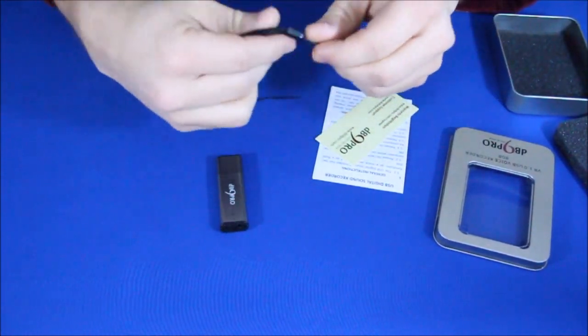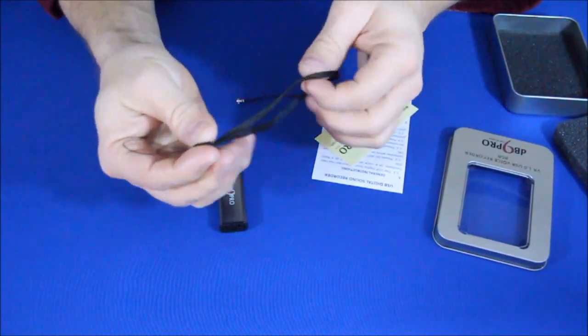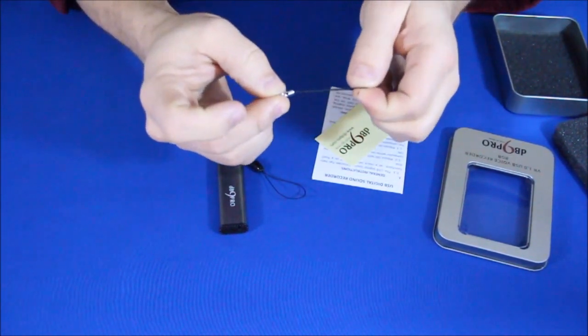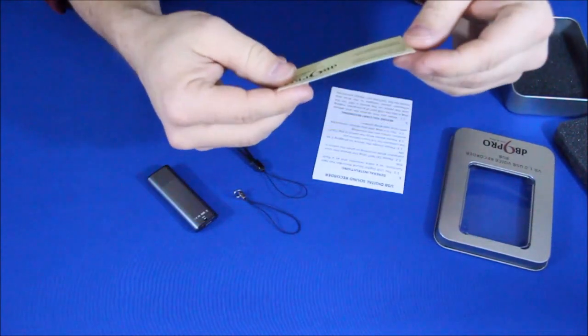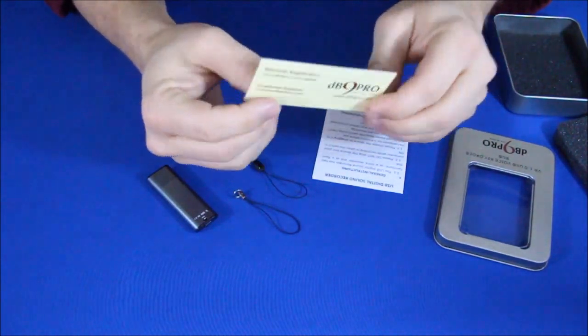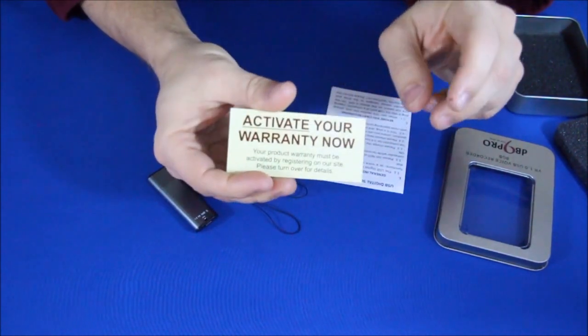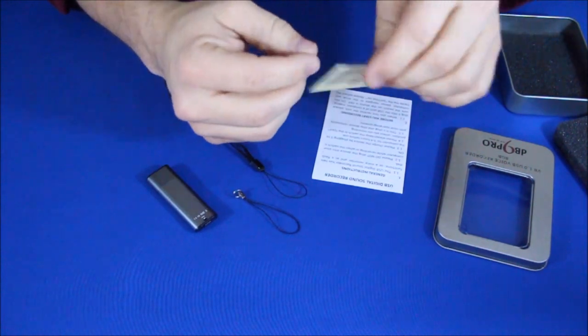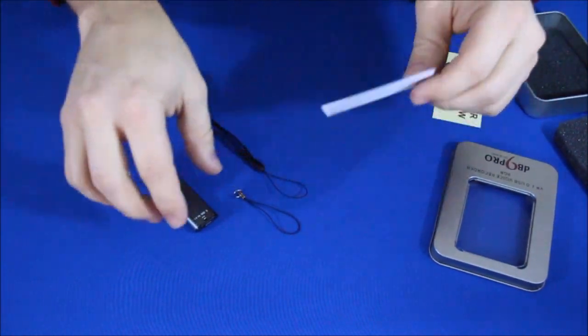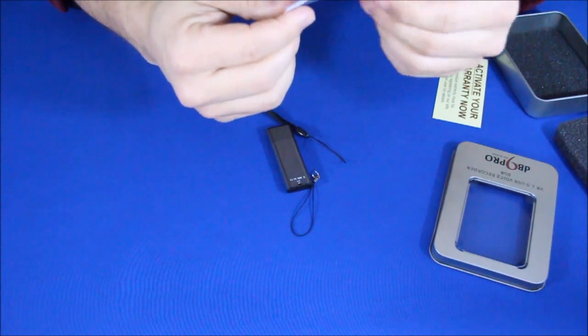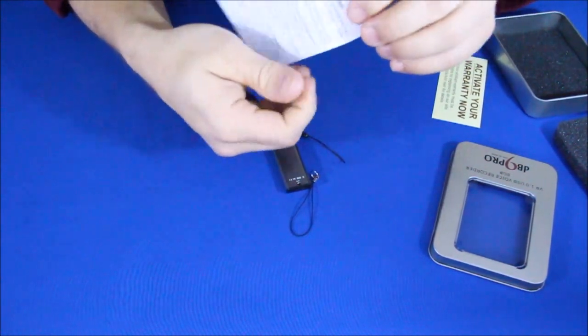We've got a couple of lanyards here. We've got a nice wrist strap type lanyard and then one of the lightweight more string type or cord type lanyards. It looks like it's got the warranty registration information here and it tells you to activate your warranty now so we will probably do that when we get to start using it.